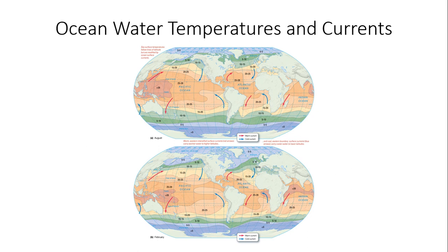Here are the ocean water temperatures and currents as a whole, looking at the globe. The top graphic shows August and the bottom graphic shows February, illustrating the differences between late summer and wintertime water temperatures. The winter hemisphere shows colder water temperatures closer toward the equator compared to the summertime. The temperature ranges in degrees Celsius of these ocean currents are shown between the seasons.